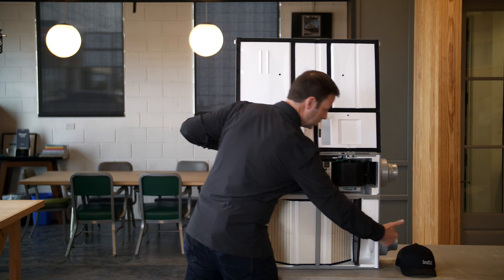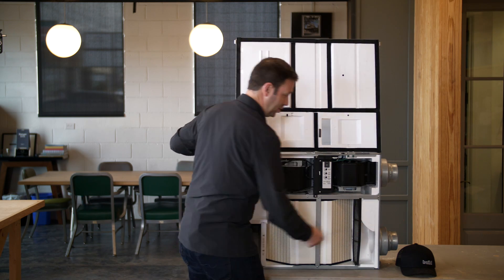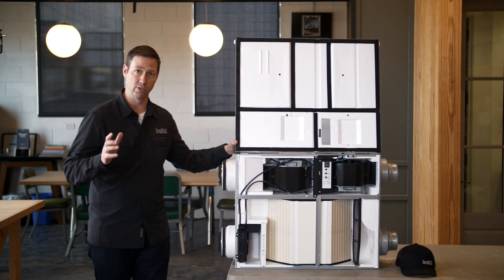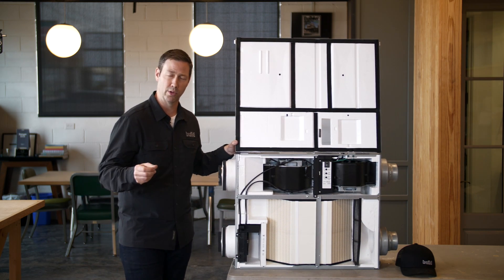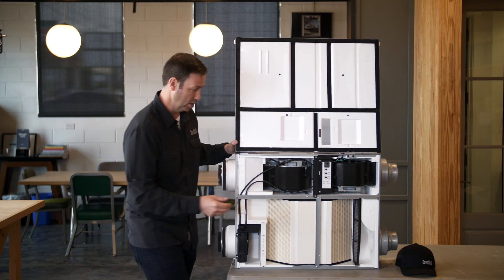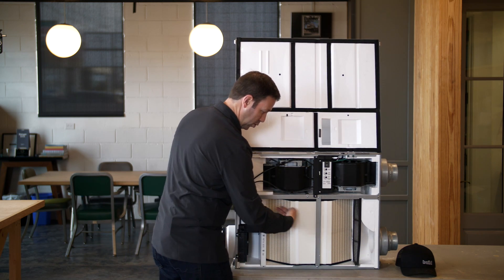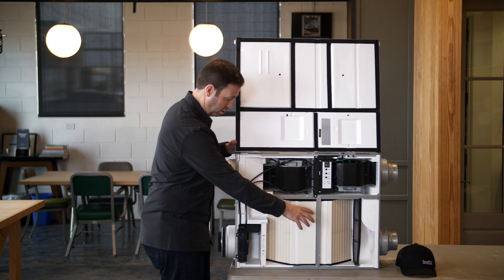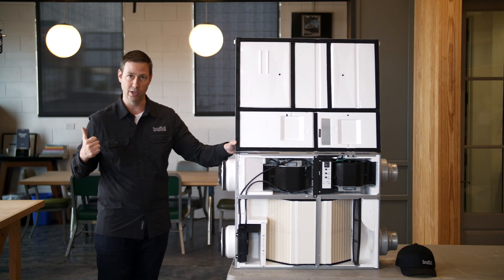And then the other airstream, this is going to bring air from the house on this side. You're going to usually take it out of your kitchens or your bathrooms, places where things might be a little more humid in the house. And then it's also going to go through this core, but the two airstreams do not touch. And then it's going to be exhausted out here.